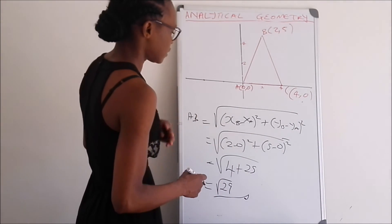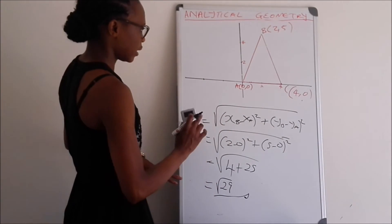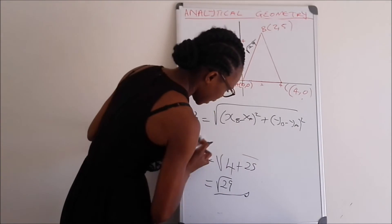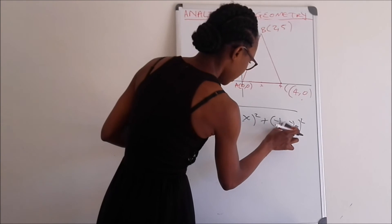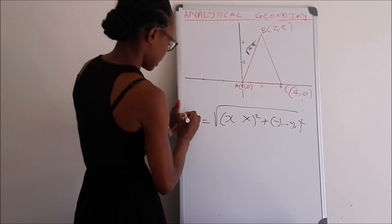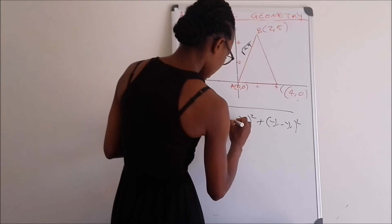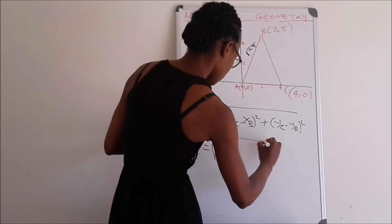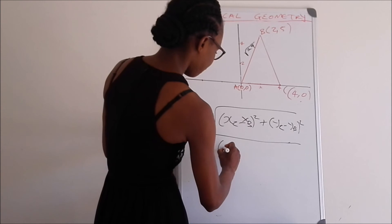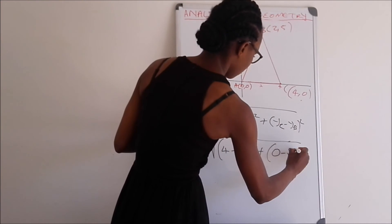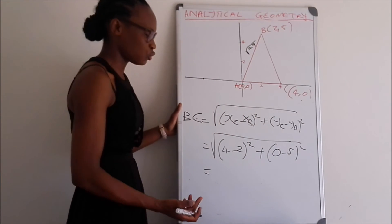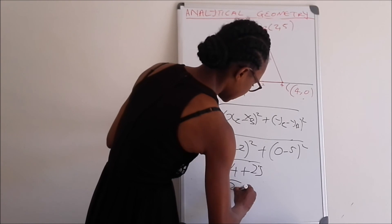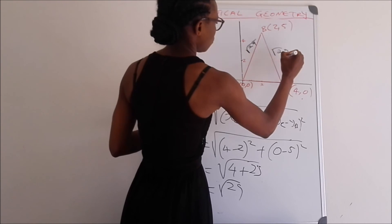Now finding the distance BC: √((x_C − x_B)² + (y_C − y_B)²) = √((4 − 2)² + (0 − 5)²) = √(4 + 25) = √29. So the distance BC also equals √29, the same as AB.